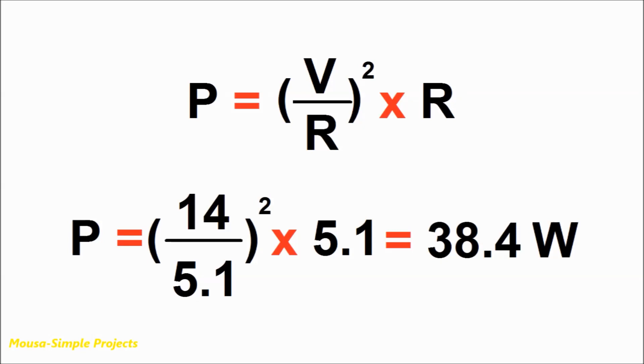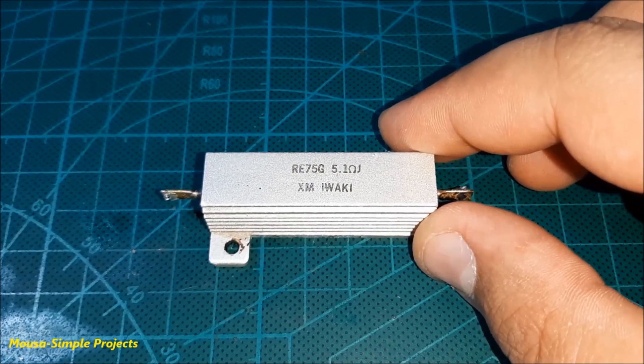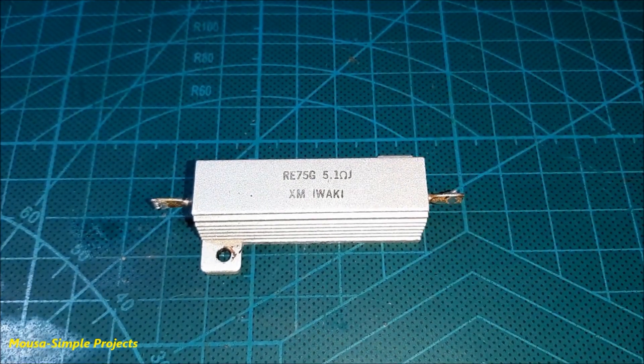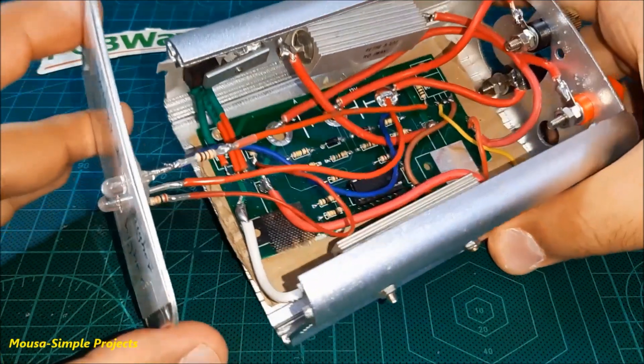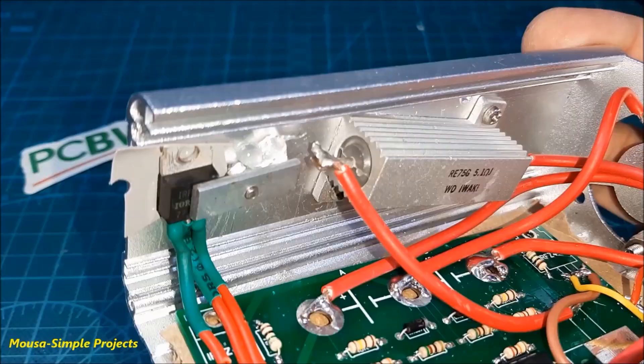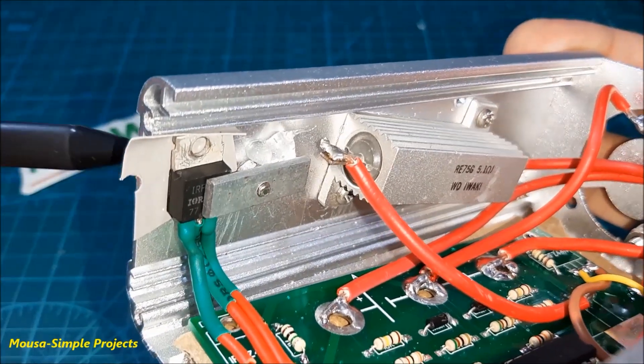According to my calculation, the power dissipation is less than 40 watts. So the problem is not from the resistor itself but because there is no proper heat sink around it. To solve this problem, I put my circuit inside a metal enclosure and use it as a heat sink to cool down the resistors and the MOSFETs.